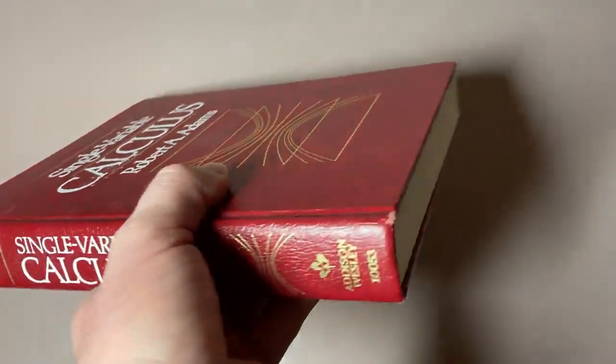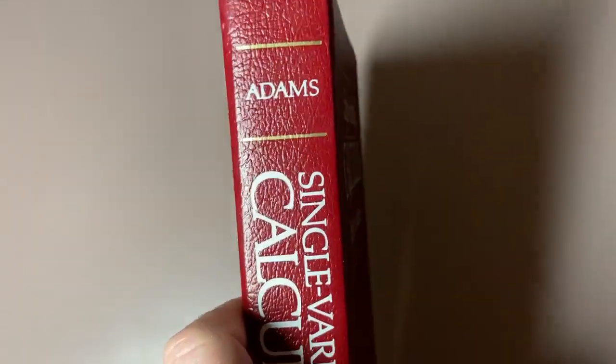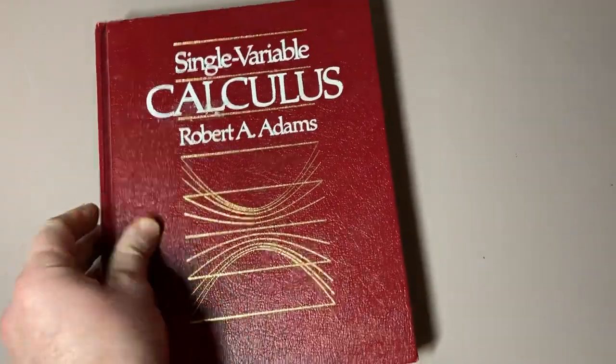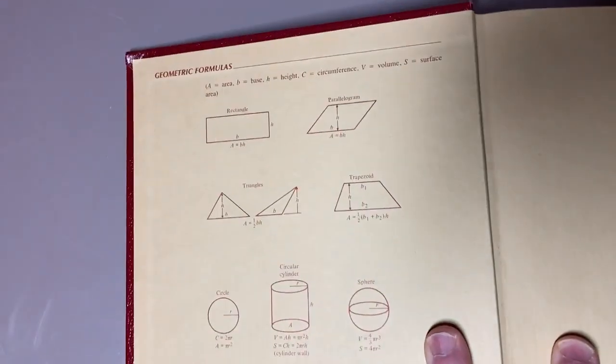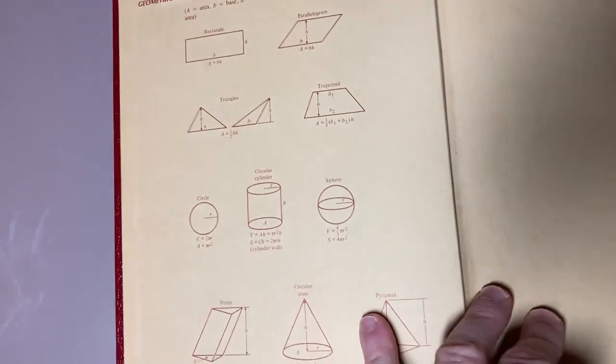It's really well-made, and as the name implies, it is for single variable calculus. I believe this book was published in the 80s. Let's take a look inside it. It's got some geometric formulas on the inside cover.